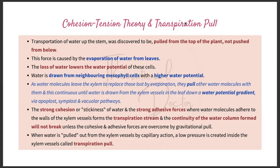The strong cohesion (stickiness) of water and the strong adhesive forces — whereby water molecules adhere to the walls of the xylem vessel — form the transpiration stream. The continuity of the water column will not break unless the cohesive and adhesive forces are overcome by gravitational pull. When water is pulled out from the xylem vessels by capillary action, a low water pressure is created inside the xylem vessels; this is called the transpiration pull. This pulling force causes water to be sucked up the xylem vessels, sufficient to move water up to the leaves.